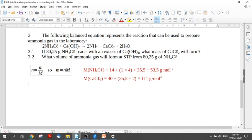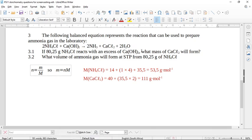So let's look at this calculation. If 80.25 grams of ammonium chloride react with an excess of calcium hydroxide, what mass of calcium chloride will form? So obviously now the ammonium chloride has to be the limiting reagent because they said they've got an excess of calcium hydroxide. So the calcium hydroxide we can ignore, but we do need to find the mass of calcium chloride over here, which is on the other side of the reaction.